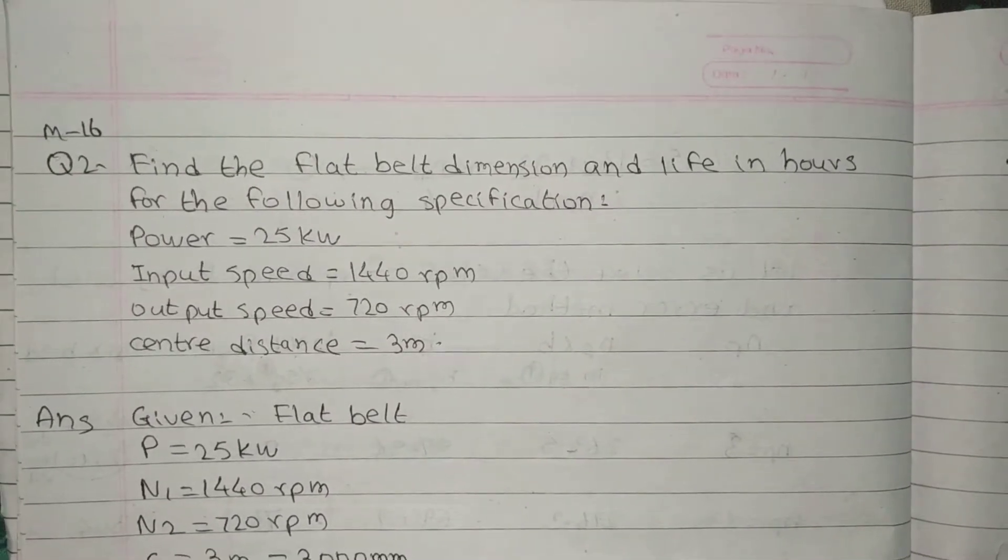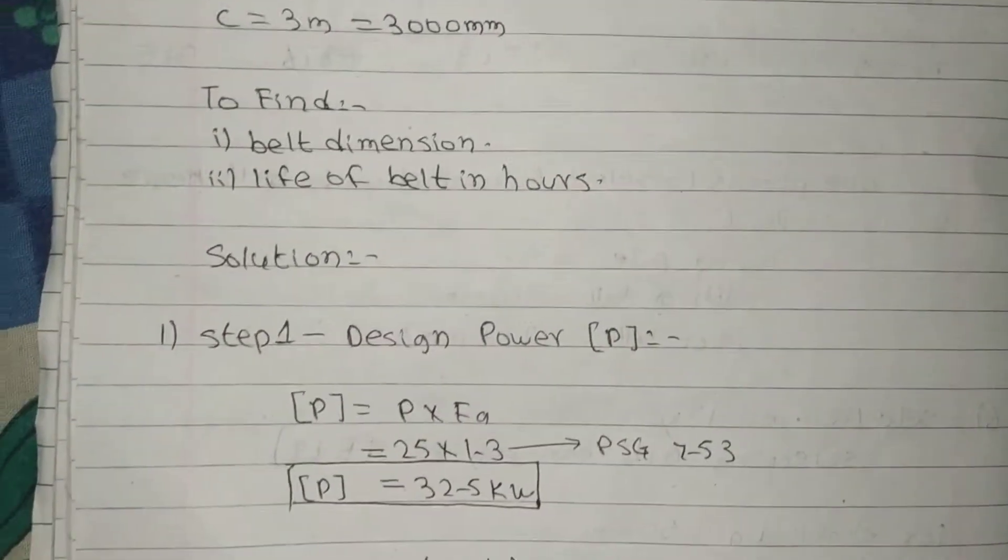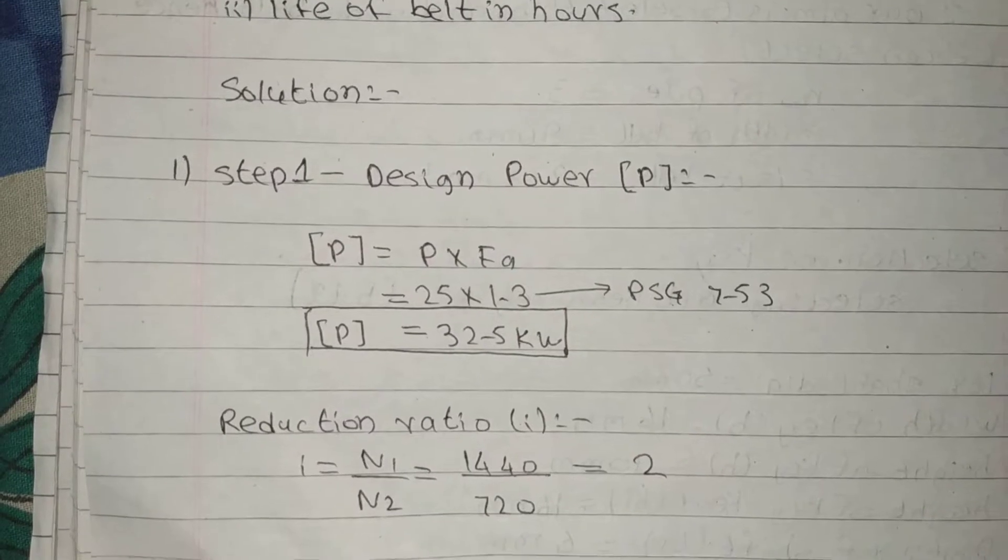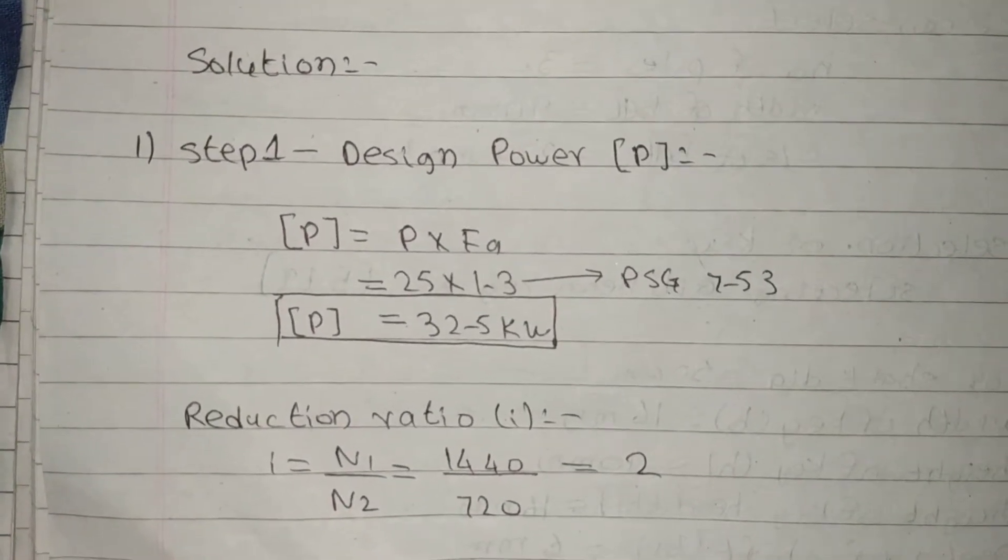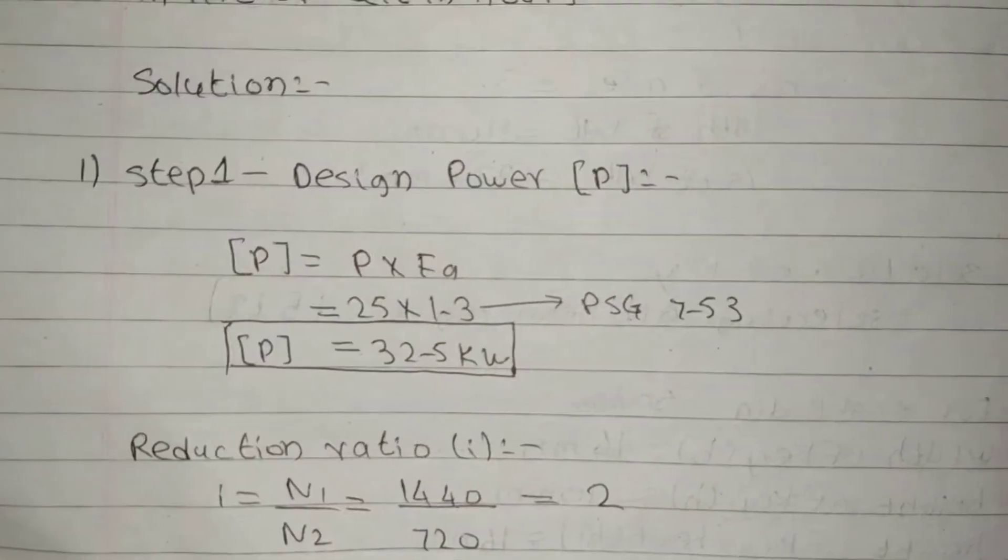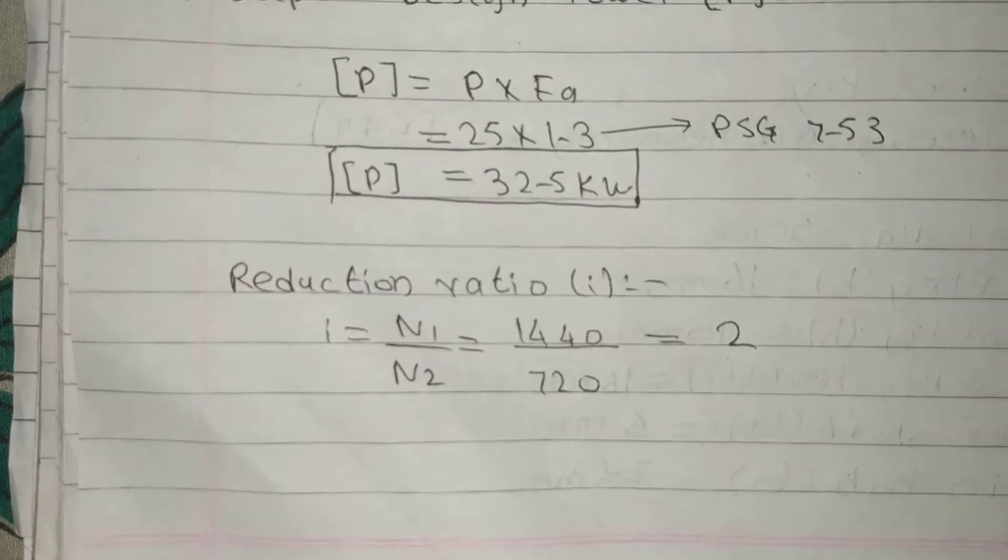This type concept of life is not given. Step 1: Design power. Formula is P into FA. FA will get from PSG 7.53, which is 1.3. Reduction ratio i is equal to N1 upon N2, reduction ratio i equals 2.